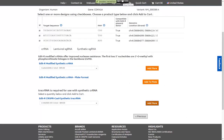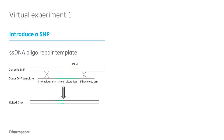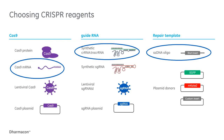Now that we've designed our guide RNAs, let's move on to the next step in our virtual experiment, where we will introduce our SNP. For this experiment, we will use Cas9 mRNA, the synthetic two-part guide RNA, and a single-stranded DNA repair template to serve as our donor for HDR.